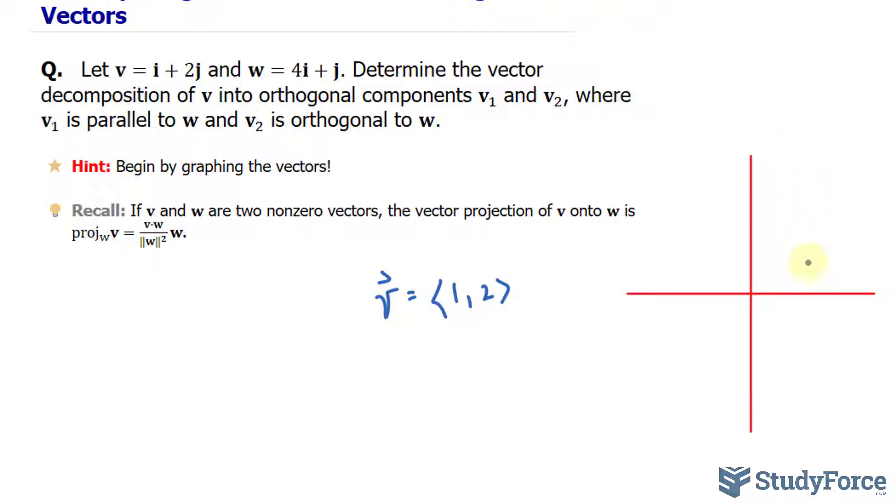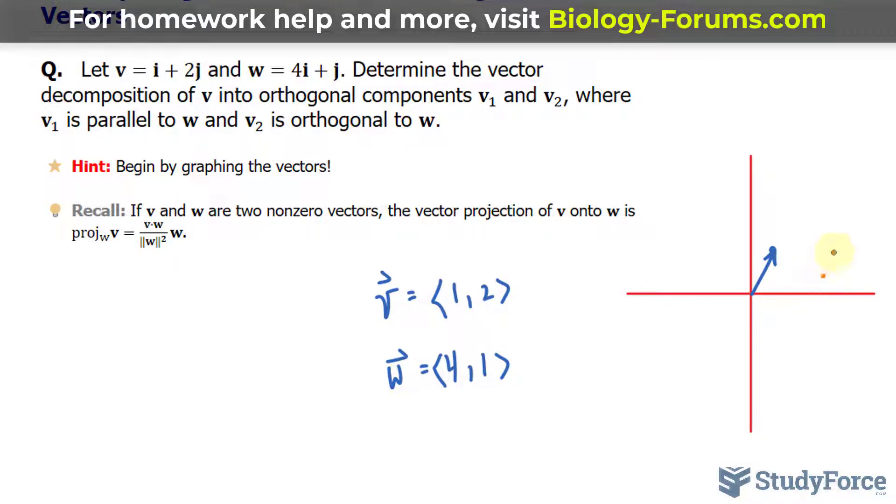That lies in the first quadrant. 1 and 2 should be right here. Vector W has the components 4 and 1, which also is found in the first quadrant. 4 and 1 is over here.